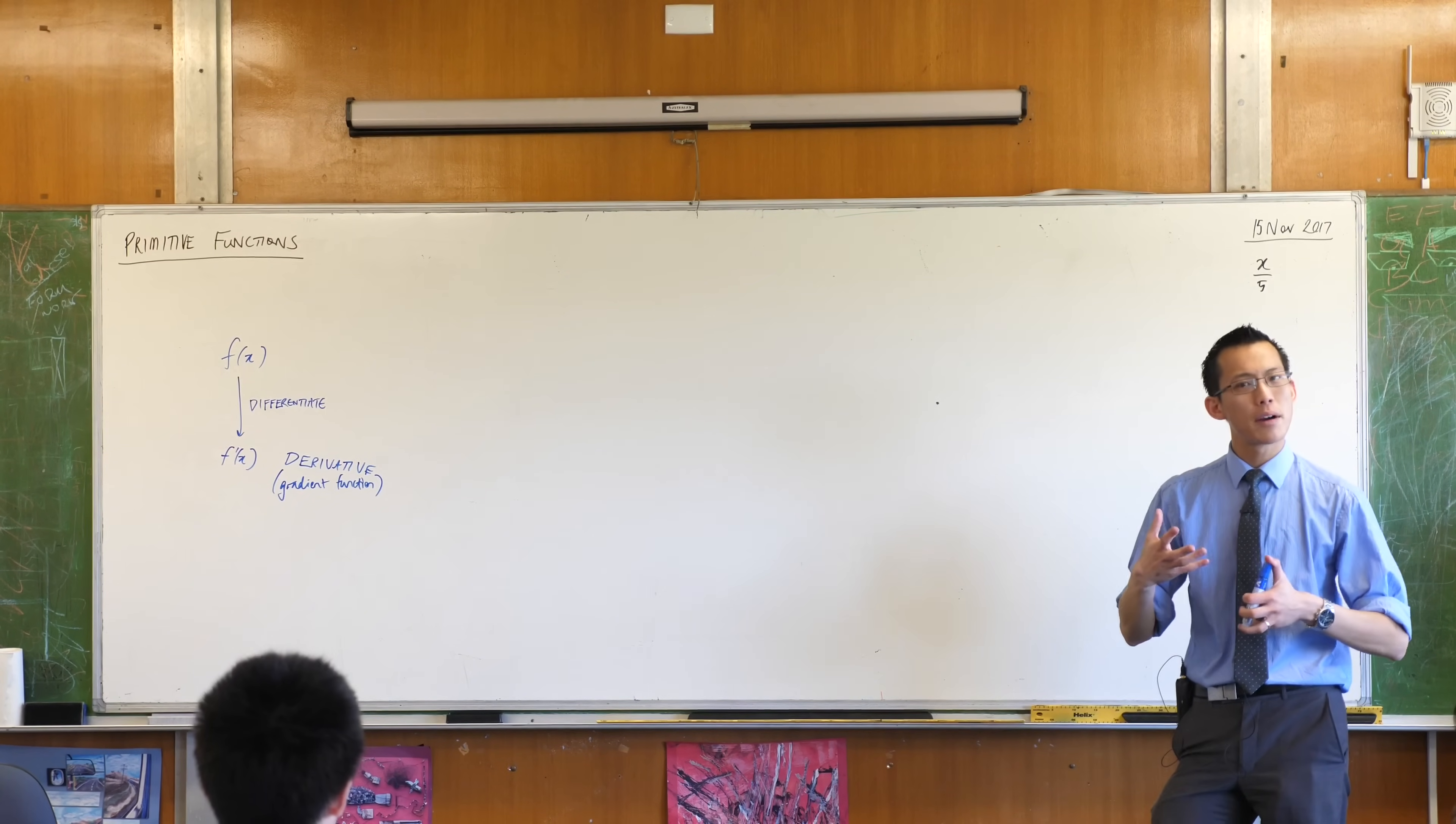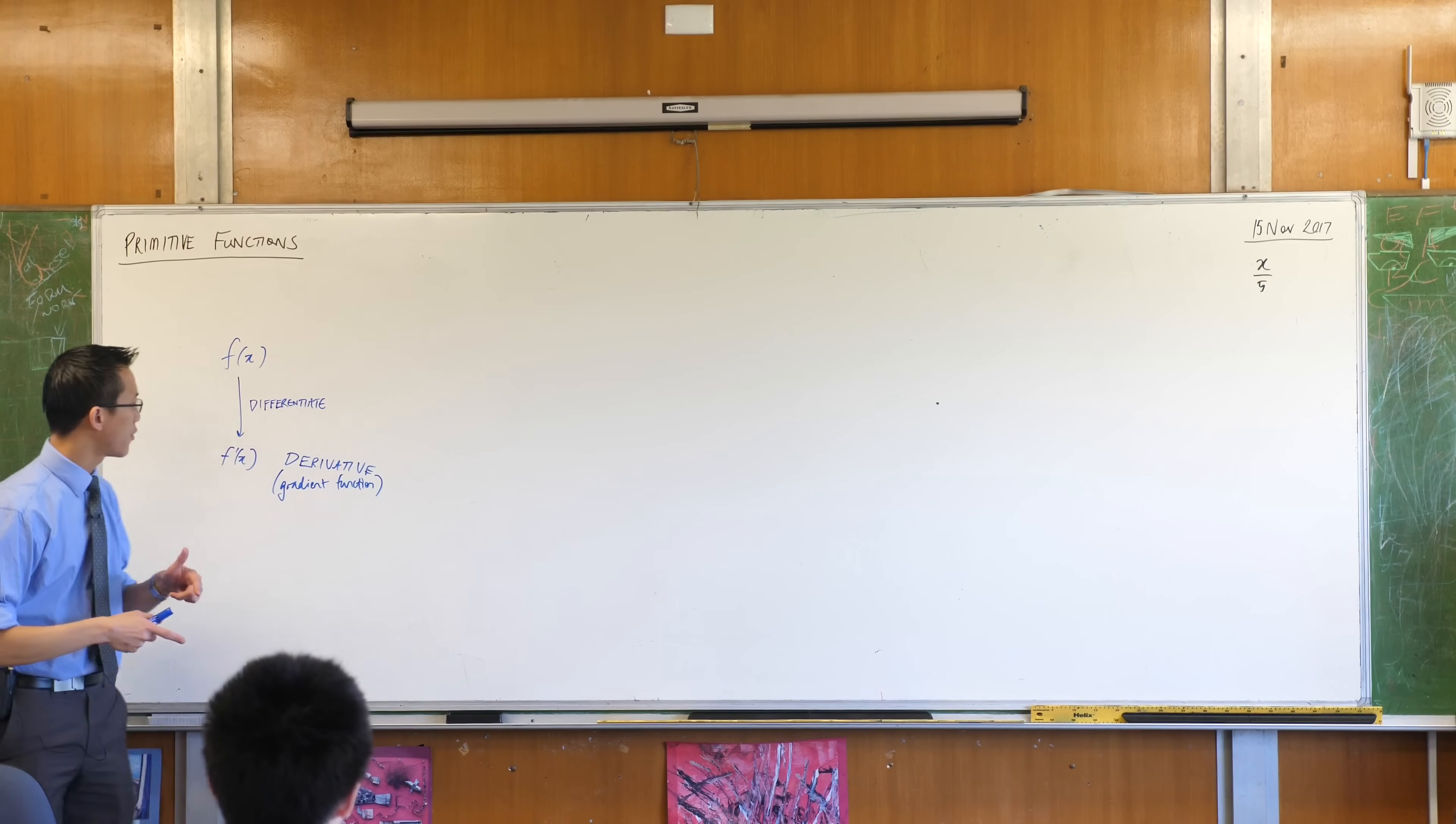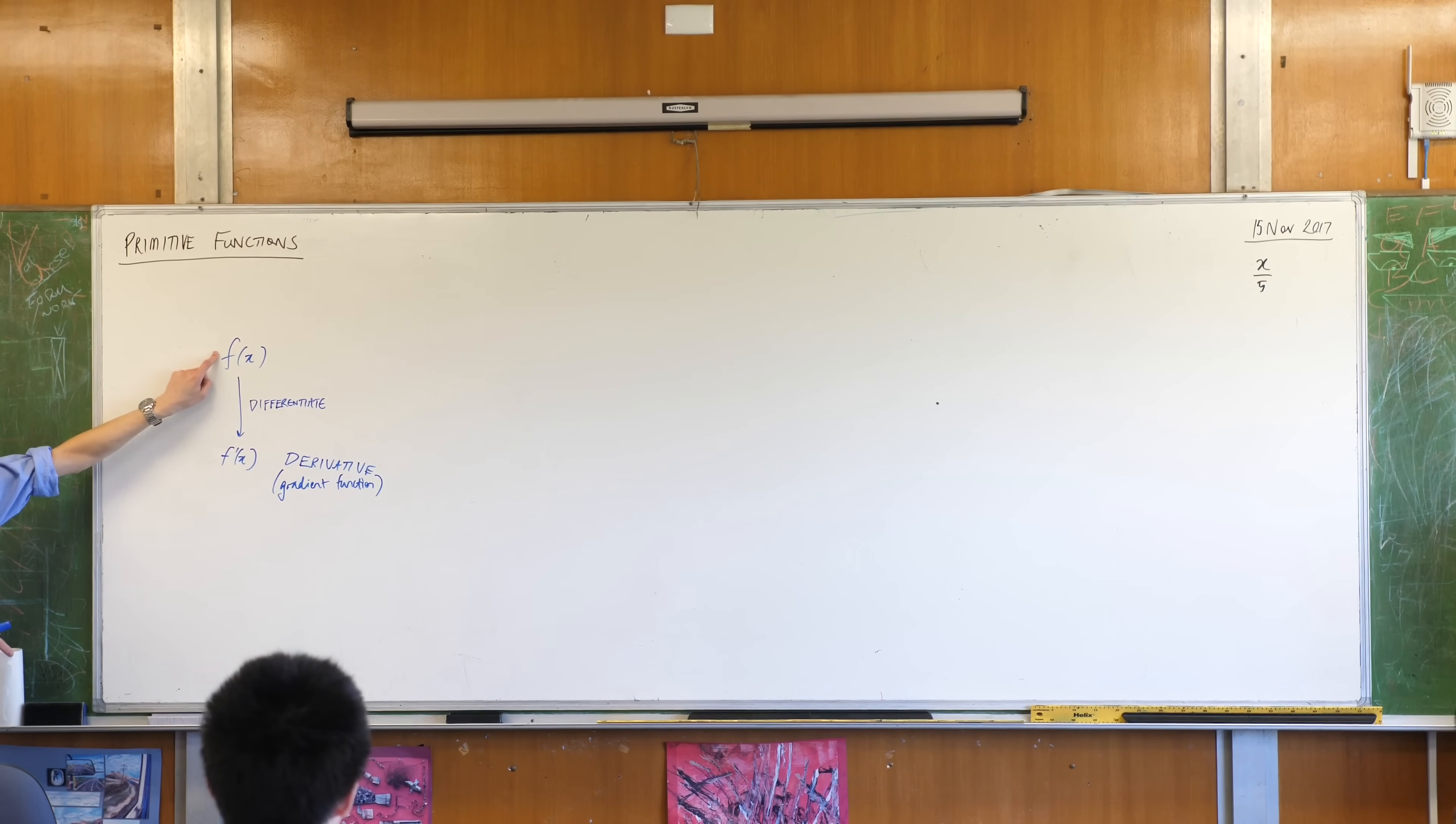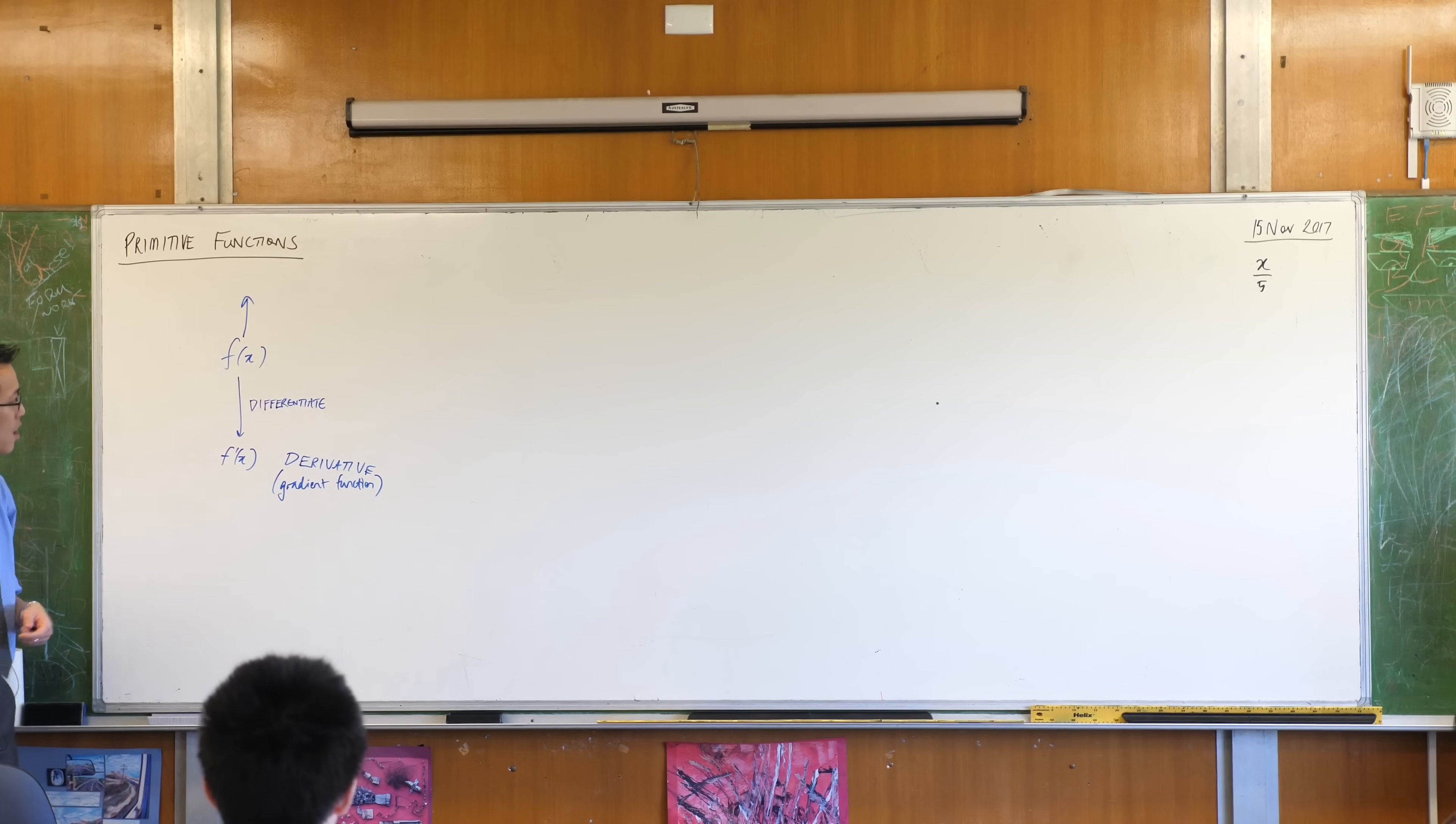It's not that much a stretch of the imagination to imagine, well, what if this function itself was a derivative? Maybe this is like a first derivative, and this is a second derivative. That means it also came from something before it. Does that make sense? There's like an extra ladder. That's why I asked you to put a couple of empty things. If you put the arrow up, from f of x, you can get f dash. But where did f of x come from?